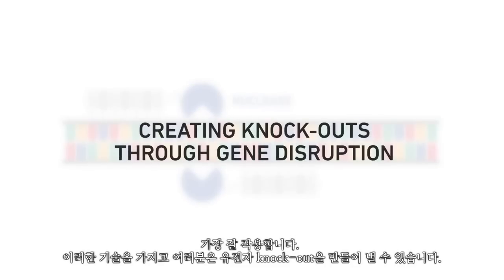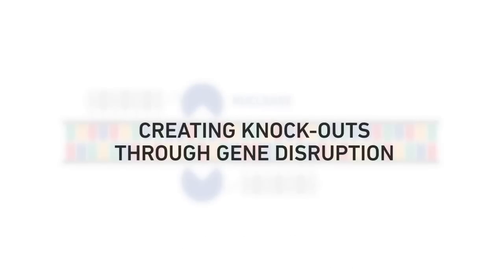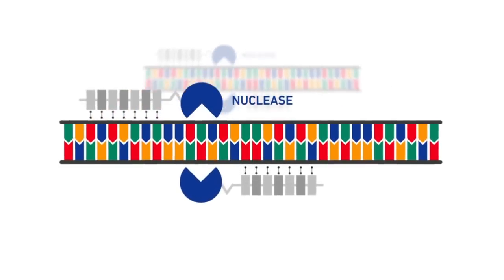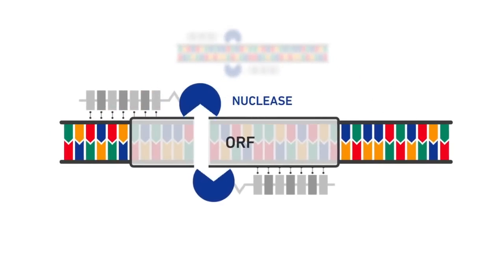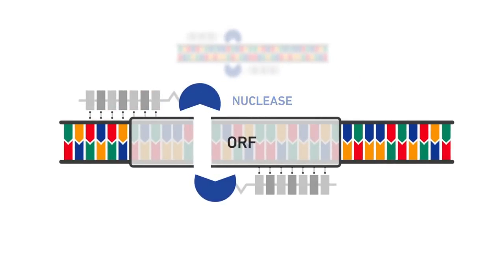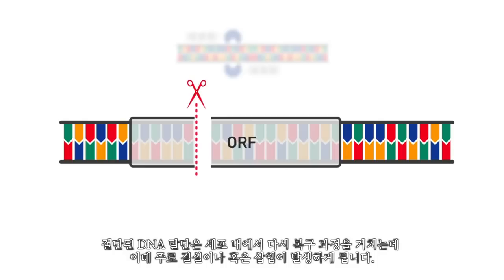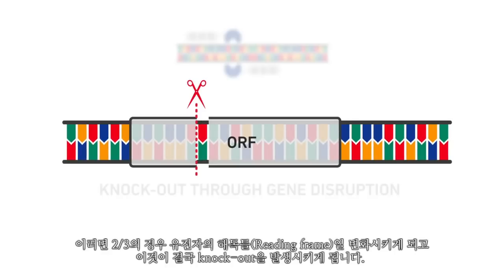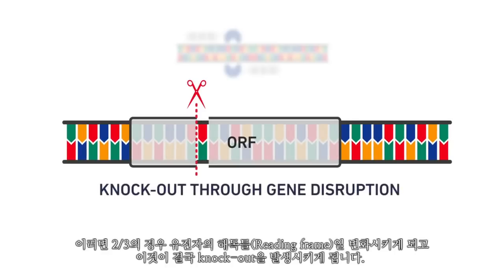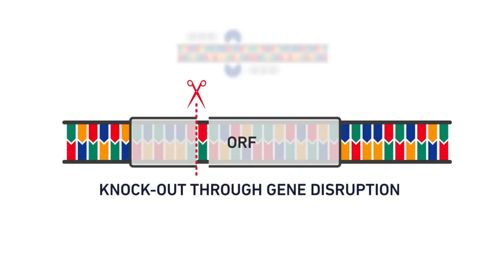With this technique, you can create gene knockouts. The DNA ends formed by the cleavage are repaired by the cell, often leaving deletions or small insertions. In these cases, two-thirds of the repair events would alter the reading frame of a gene and create a knockout.